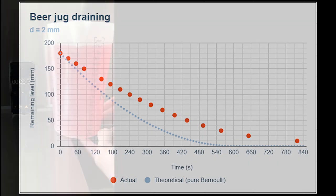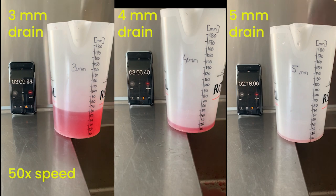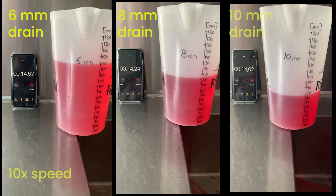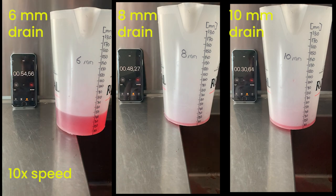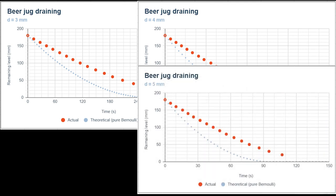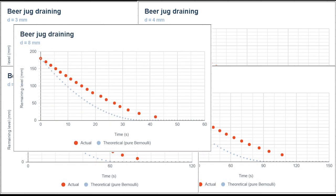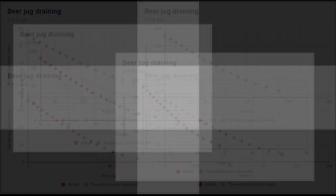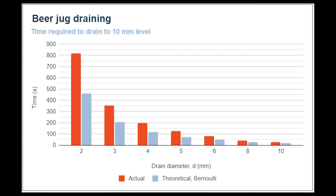I repeated this experiment for 3, 4, and 5 millimeter drain holes, and then again for 6, 8, and 10 millimeter drain holes. For all of these I've plotted both the theoretical as well as the actual time. Here I'm showing the theoretical time it takes to reach a level of 10 millimeters depending on drain hole versus the actual time I measured to get to 10 millimeters. The error in my predictions is about 50 to 80 percent.